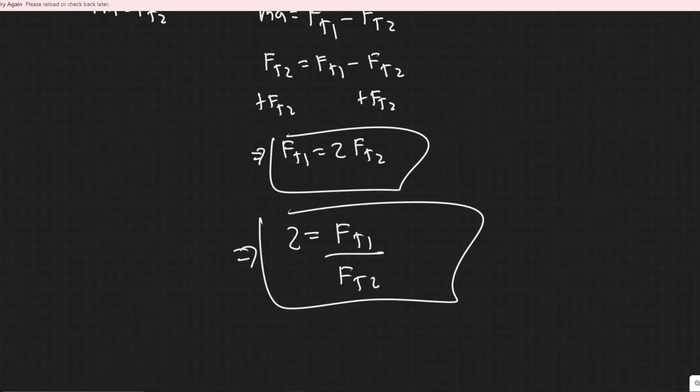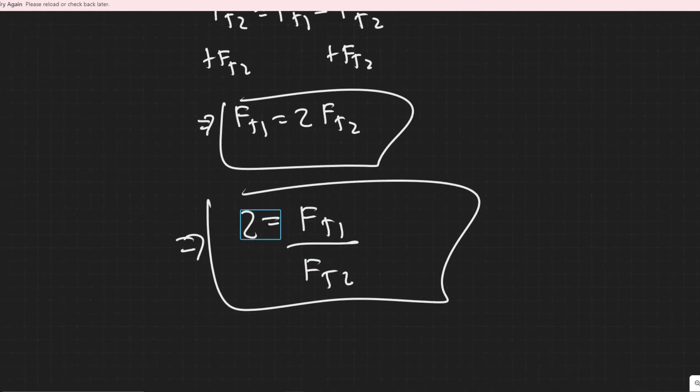Writing it either way, I'm pretty sure would be correct. But essentially, you're just saying that Ft1 is twice what Ft2 is. So the ratio is 2. So I guess your ratio of them would be 2. But they're trying to get you to understand that it's basically double. Ft1 is twice it. So the ratio is 2.